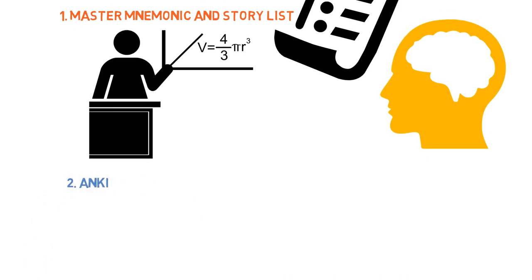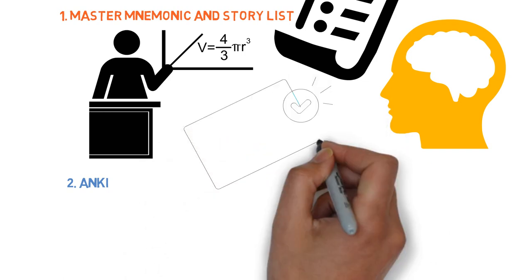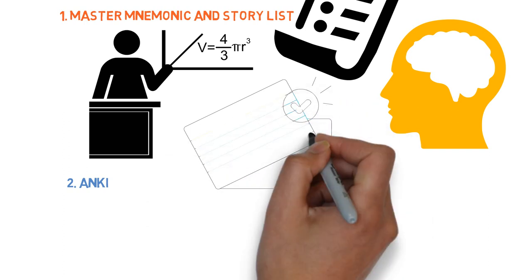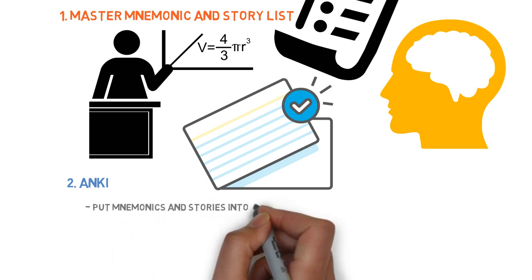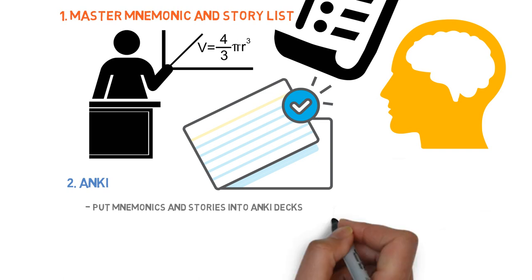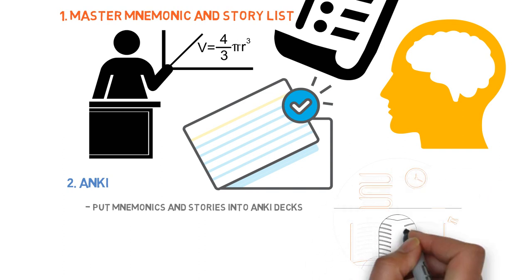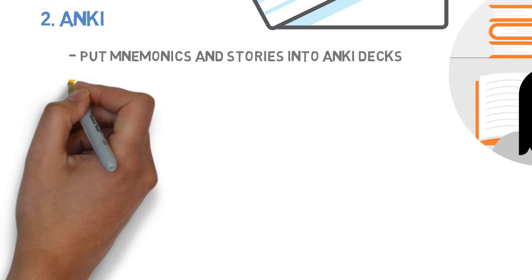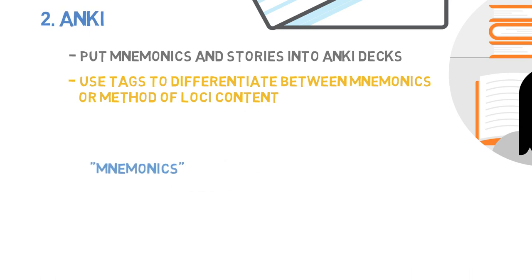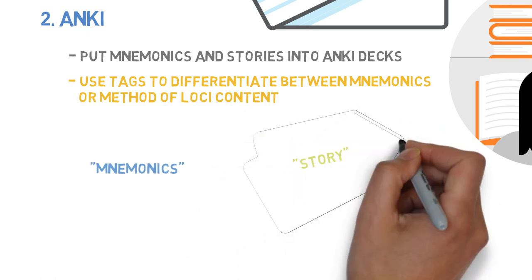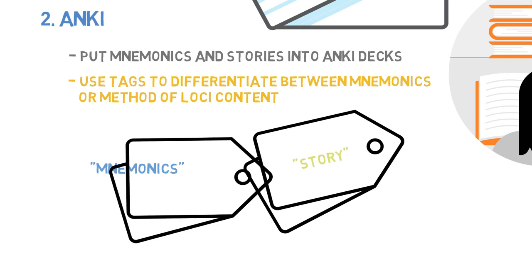The second method was Anki. I would take my mnemonics and stories and put them in Anki decks. This way I was able to review my mnemonics along with all the other information I was reviewing on a daily basis — because you have to do Anki every single day. If you use Anki for these methods, I recommend making tags to indicate which cards are mnemonics or use the method of loci. My two tags were 'mnemonics' and 'story.' By having these tags, it becomes a lot easier to identify these cards after you make them, in case you want to edit them or do a custom study session reviewing just these cards.